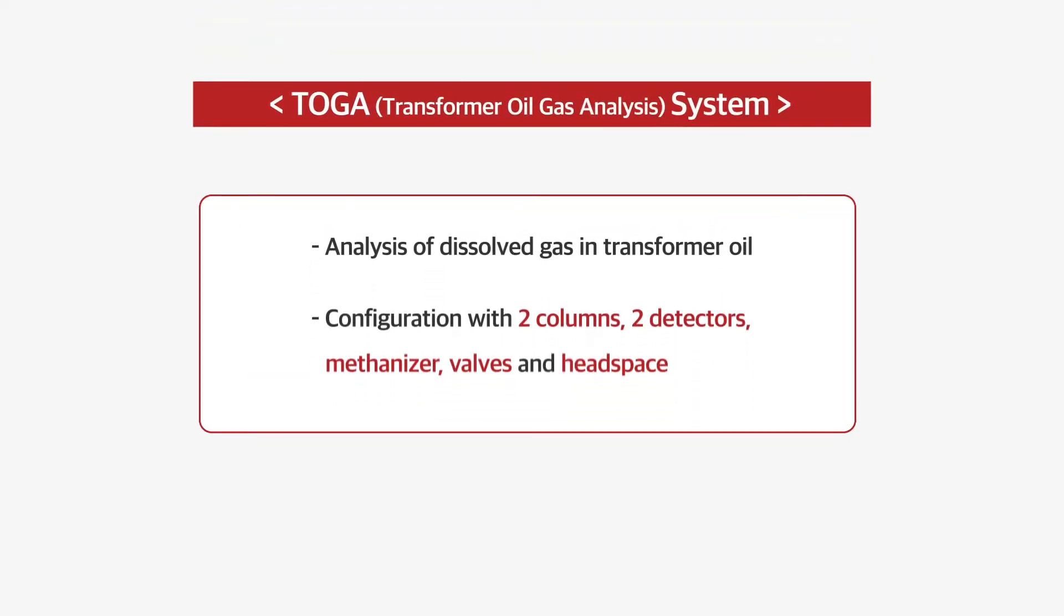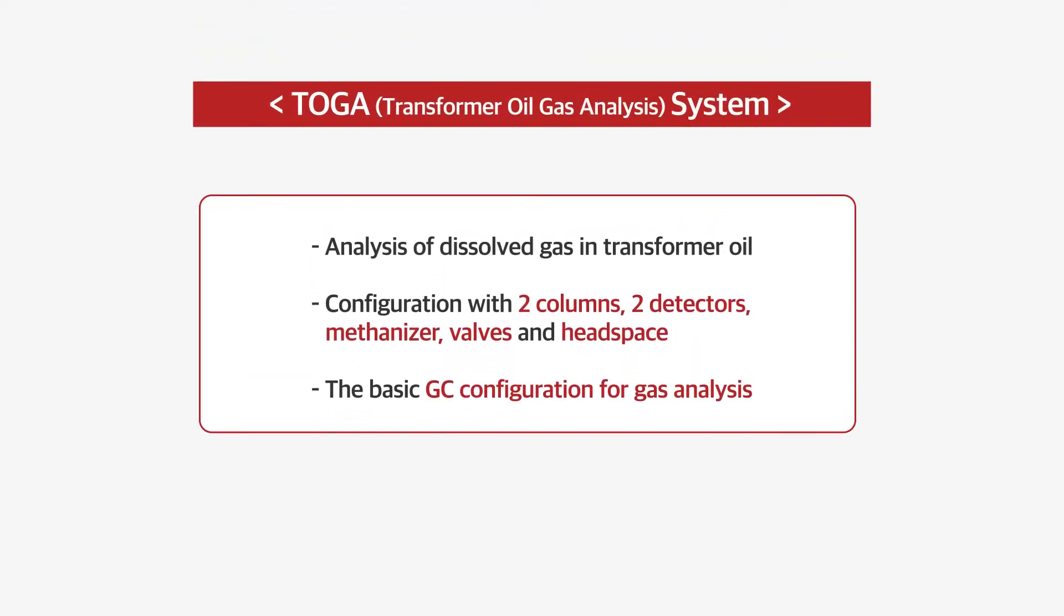TOGA system is for analysis of dissolved gas in transformer oil, in which the sample contains permanent gases and light hydrocarbons that cannot be analyzed with a single column and detector. This system is configured with two columns, two detectors, methanizer, valves and headspace, so it is widely referred to as the standard of gas analysis.